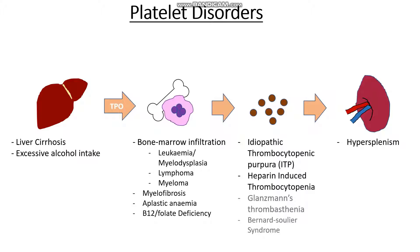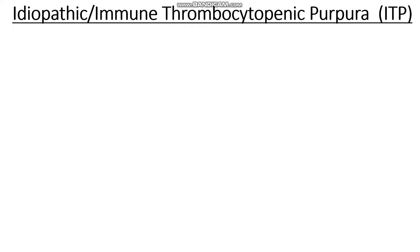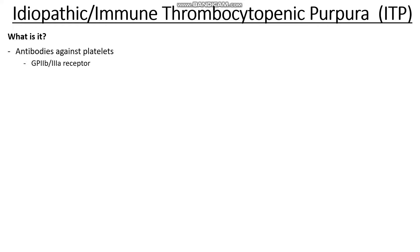Now let's get into more about idiopathic thrombocytopenic purpura, which may also be called immune thrombocytopenic purpura — so we know our immune system is involved. Thrombocytopenic refers to deficiency in platelets, and purpura refers to a purpuric rash which is quite common in platelet deficiencies. It all starts with our platelets, where antibodies are being formed against them — specifically against the GP2B3A receptor. This mainly occurs in children and those who are pregnant.